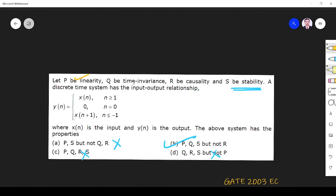So what are the things? P is right, Q is right, R is wrong, S is right. So P, Q, S right; R is wrong. Option B is the right answer. Thank you.